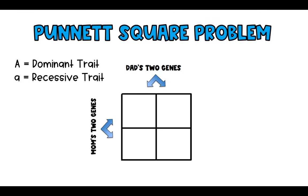On the Punnett square, mom's two genes go on the left side — she has two genes for hair color she could pass down, and so does dad. Notice that they're placed outside of the box. Students often try to write them inside the box, but the inside contains the four possibilities for children and the characteristics those kids would have.